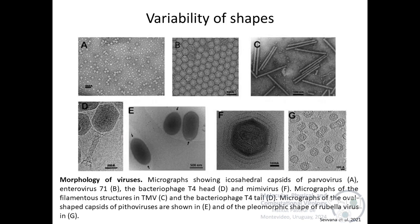Viral particles come not only in different sizes, but also in different shapes. Under the electron microscope, most viruses appear to be spherical, as we can see in figures A and B, or oval shapes, as we can see in figure C. However, there are more complex morphologies, such as bacteriophages, which have a head and a tail, or mimiviruses which have fibrils around the capsid, or oval shaped capsid of pithoviruses, another giant virus.